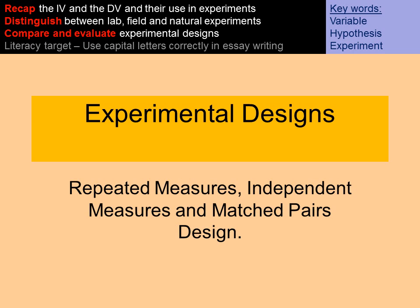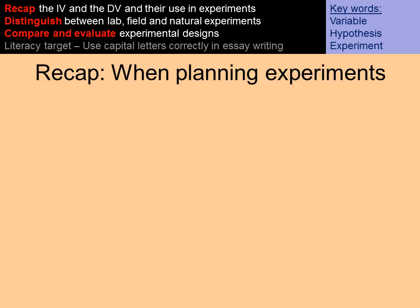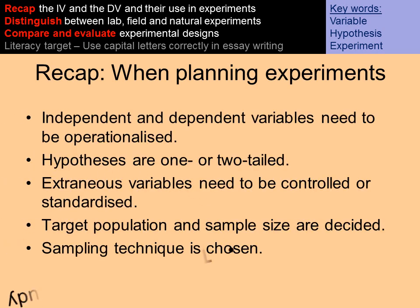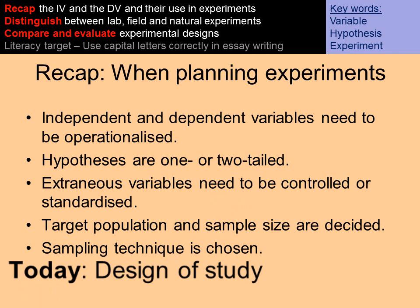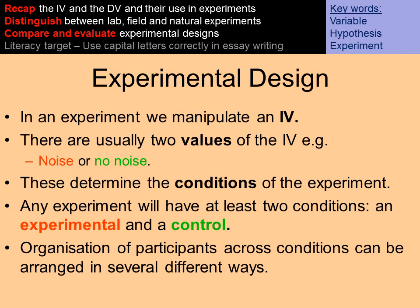You also need to know about experimental designs — how participants are used within experiments. We're manipulating the IV and there are often two values of the IV, for example noise or no noise, which determines the conditions of the experiment: condition one would be with noise, condition two would be with no noise. An experiment will often have at least two conditions — an experimental condition where something's changed and a control condition where nothing's changed — allowing us to make comparisons between the two.